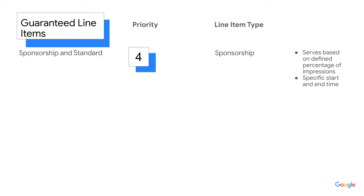First, we'll talk about guaranteed line items. Sponsorship line items are top priority. This line item should be used for direct sold campaigns where your buyer wants to take over a page or site, and serves based upon a defined percentage of impressions, and a start and end time.